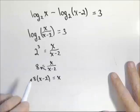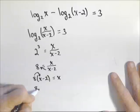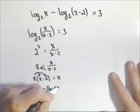So we have eight times the quantity x minus two equals x. So we have two x's in there, and we need to solve for it algebraically. What we're going to do is distribute the eight, so we have eight x minus 16 equals x.